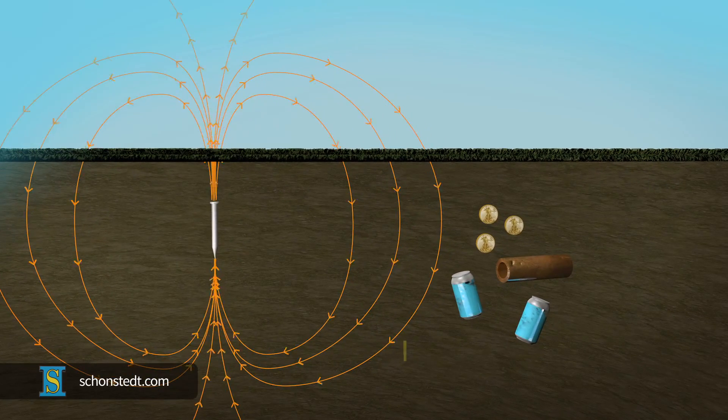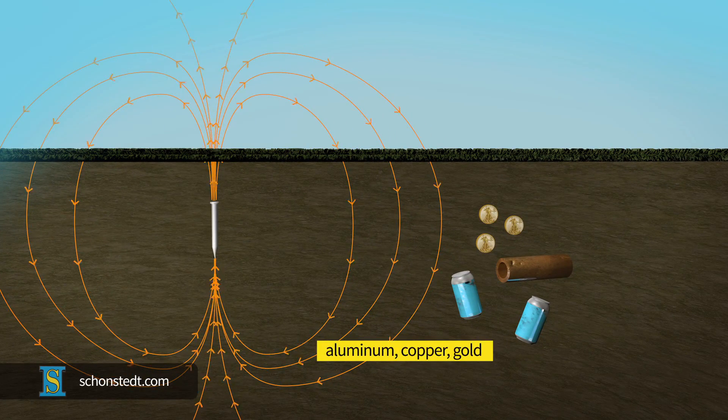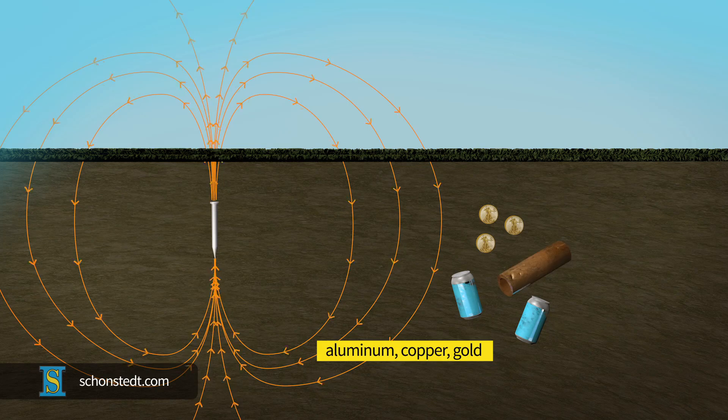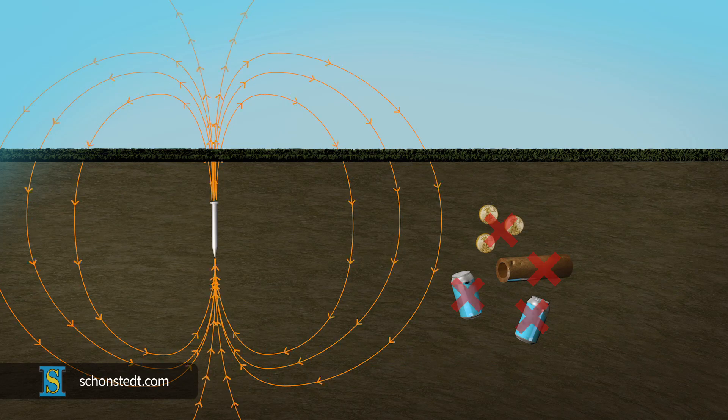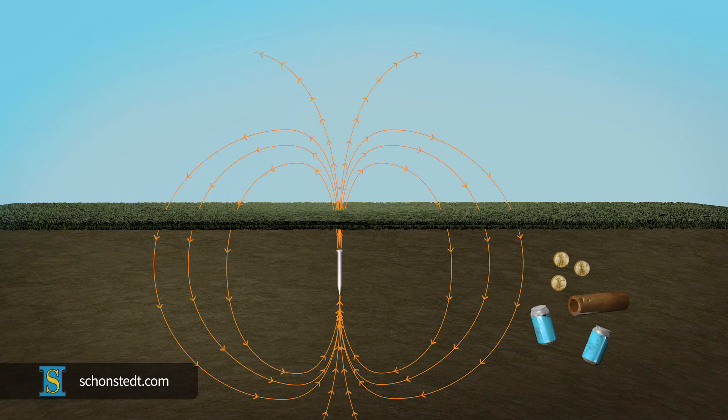By contrast, buried objects made of non-magnetic metals, such as aluminum, copper, and gold, are not affected by the Earth's magnetic field, and therefore can't be located by magnetic locators.